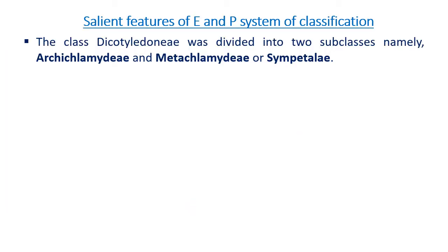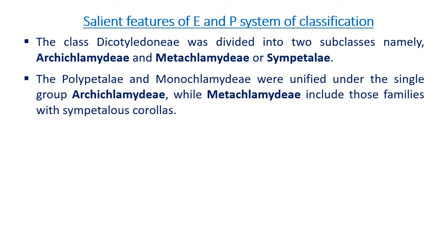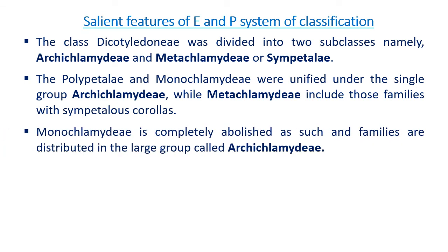Regarding the salient features of the Engler and Prantl system: the class Dicotyledoneae was divided into two subclasses, namely Archichlamydeae and Metachlamydeae. The Polypetalae and Monochlamydeae of Bentham and Hooker were unified under a single group called Archichlamydeae, whereas Metachlamydeae includes those families with sympetalous corollas.